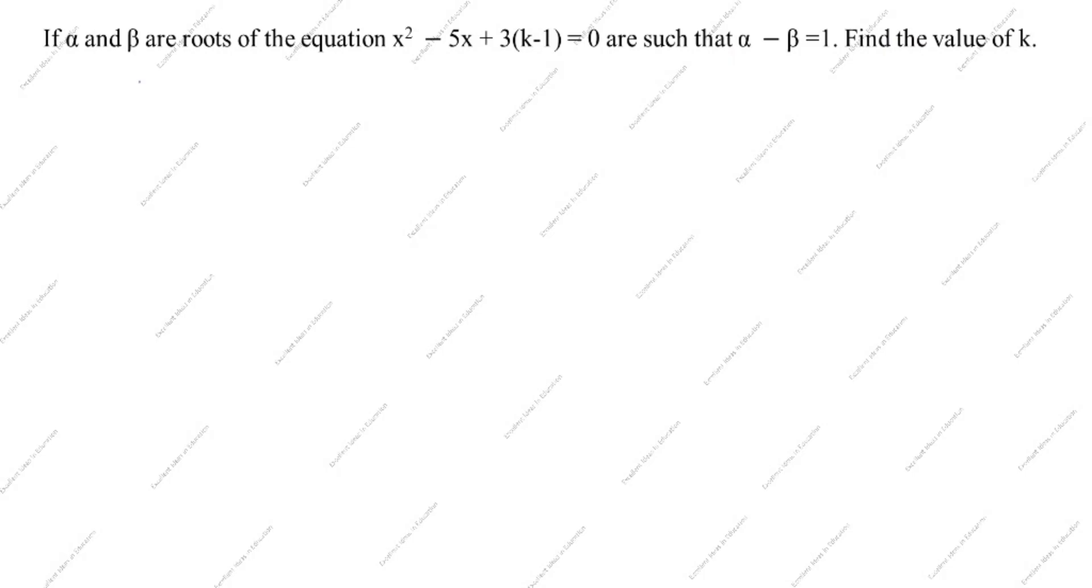What is the quadratic equation formula? ax² + bx + c. What is the given question? x² - 5x + 3(k-1). What is a? a equals 1. b equals -5. c equals 3k - 1. You see here only x² is given, so we will take 1 here.